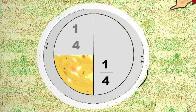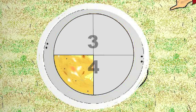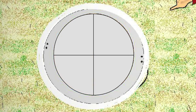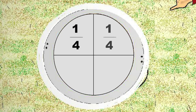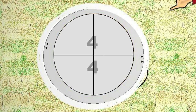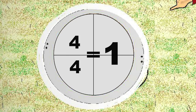You eat another one fourth — now you've eaten three fourths of the pot of stew — because one fourth plus one fourth plus one fourth equals three fourths. You eat another one fourth. Now you've eaten four fourths of the pot. 1/4 plus 1/4 plus 1/4 plus 1/4 equals 4/4, and 4/4 equals 1. So because you've eaten 4 fourths of the pot of stew, you've eaten one whole pot of stew. You must have been hungry!